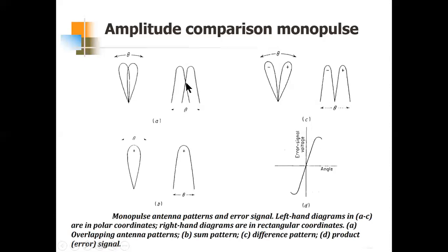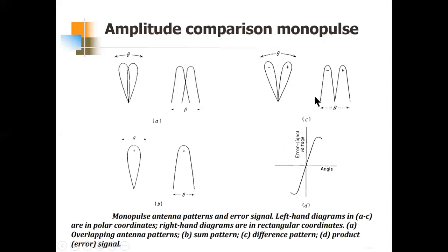In amplitude comparison monopulse, we need a sum pattern and a difference pattern. The sum pattern is the summation of the two beams and lies along the boresight axis — the crossover between the two beams. This sum pattern gives the actual range information. The difference pattern is the difference between the two beams and gives the angular error. So the sum pattern provides range, and the difference pattern provides the angle error signal.